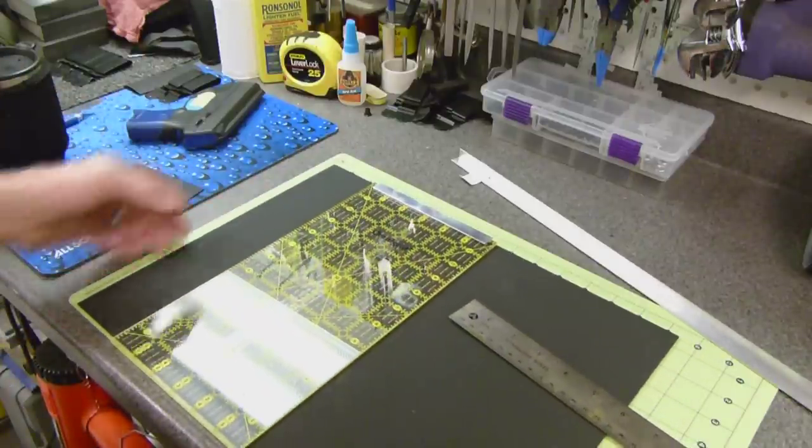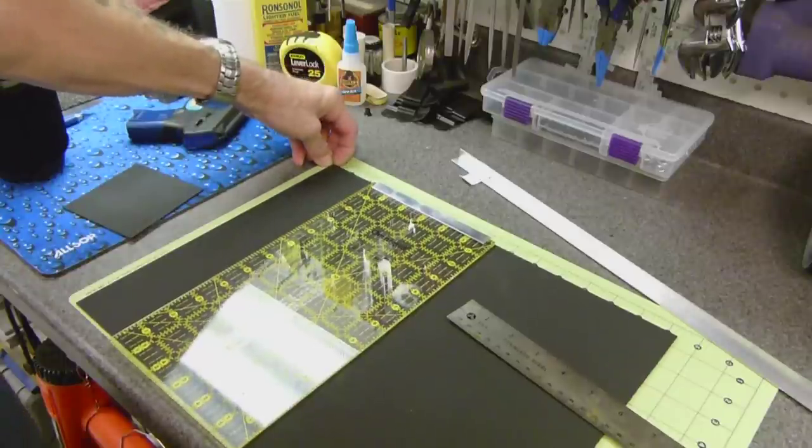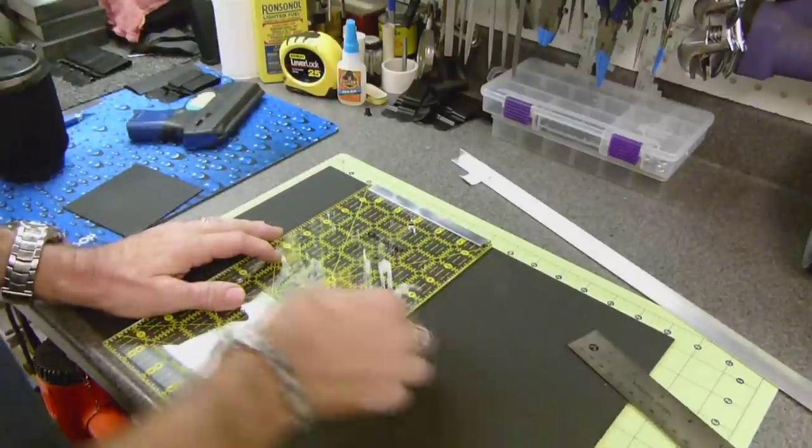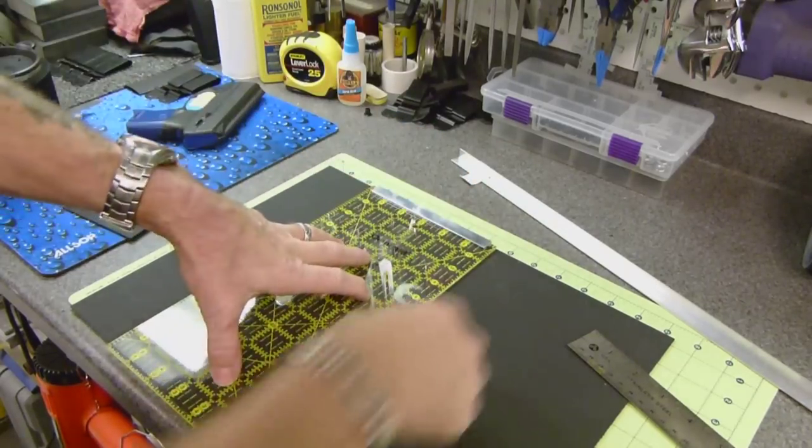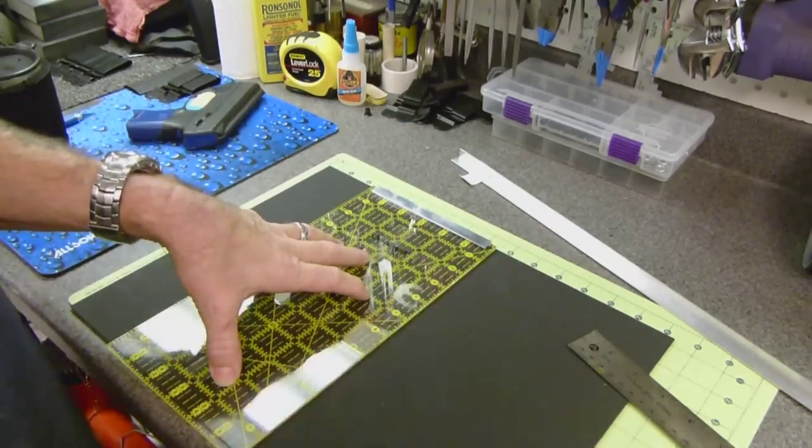But now basically all you do is line up to the one line on your cutting mat, figure out where you want. You want an 8½ inch piece, line up, tight, hold down, make your cut, done deal.